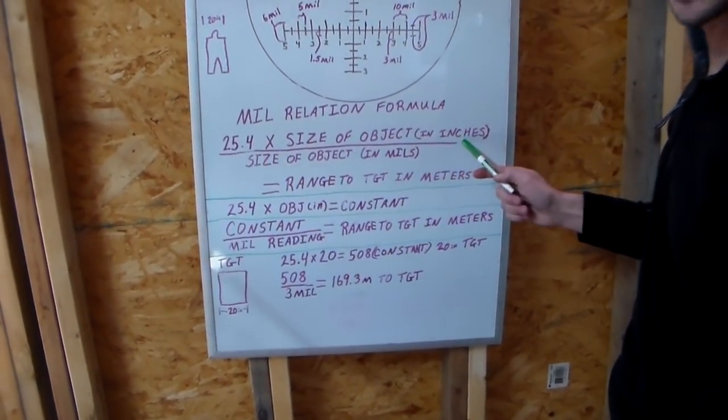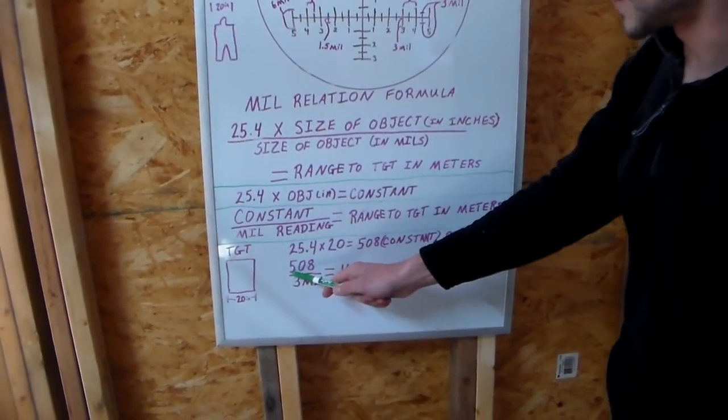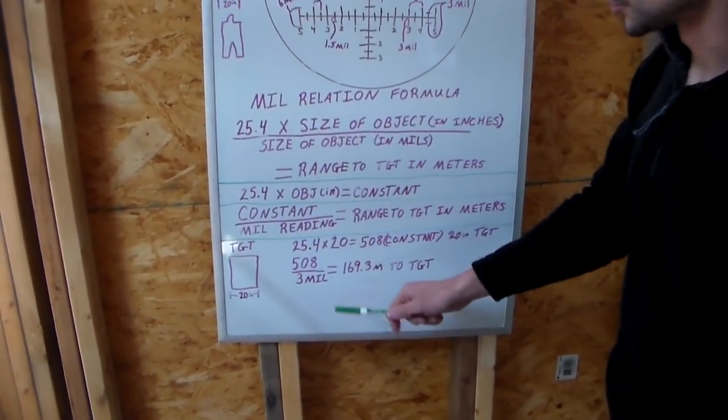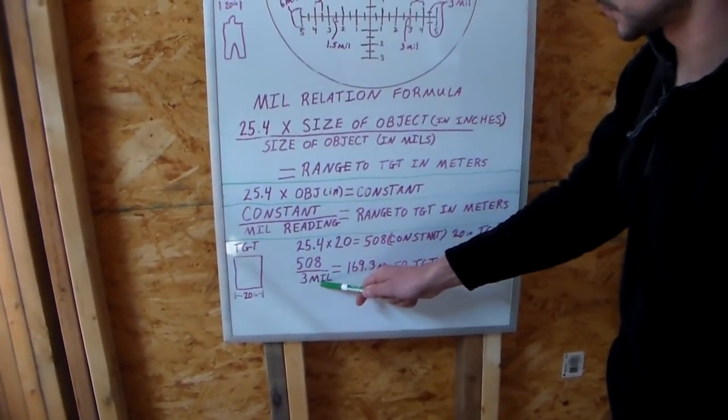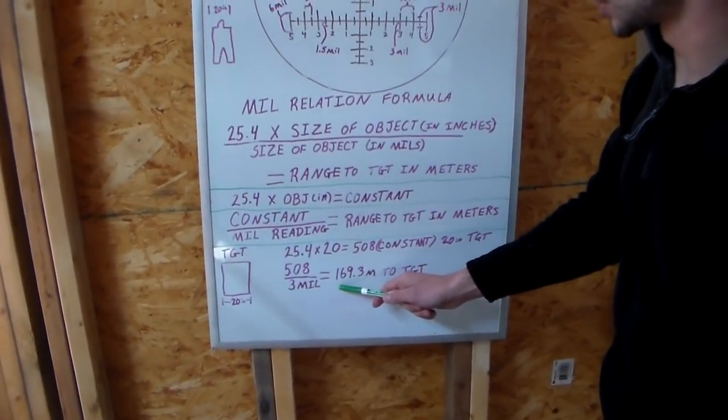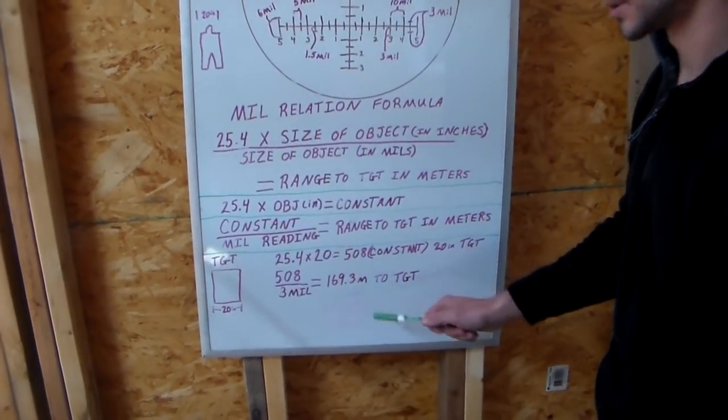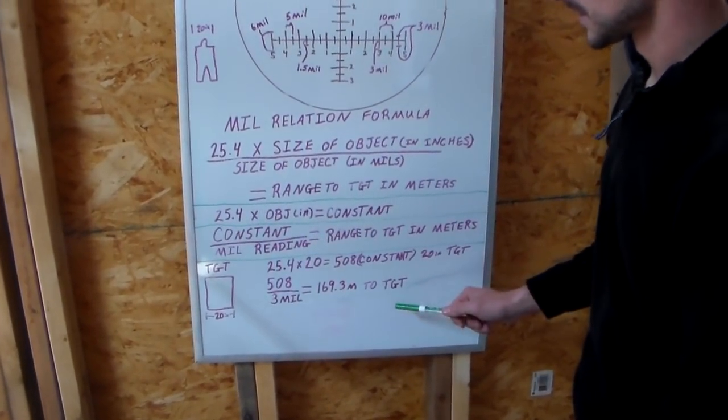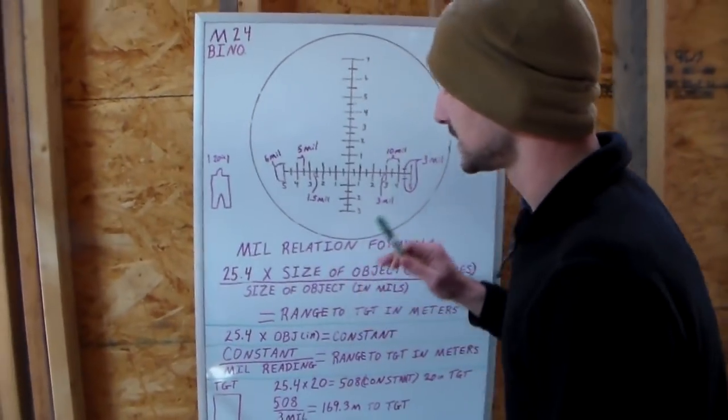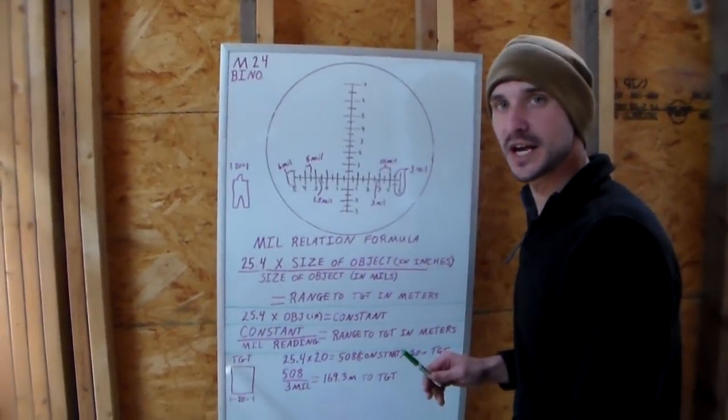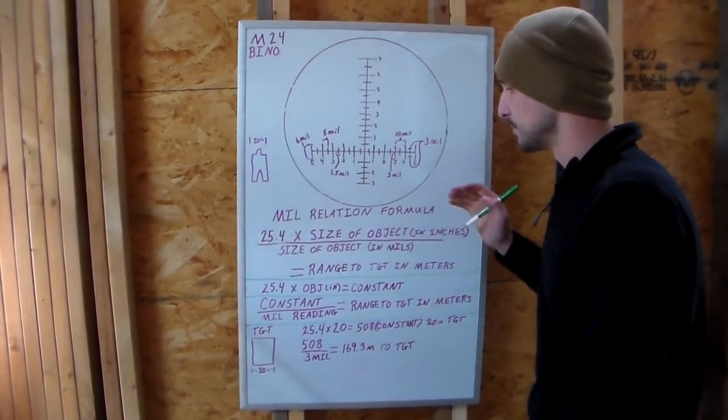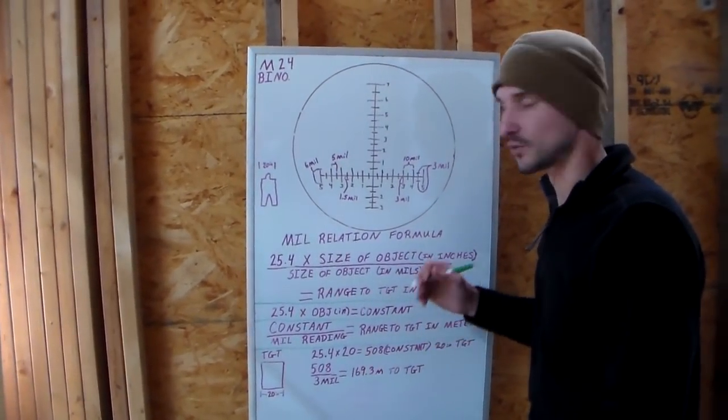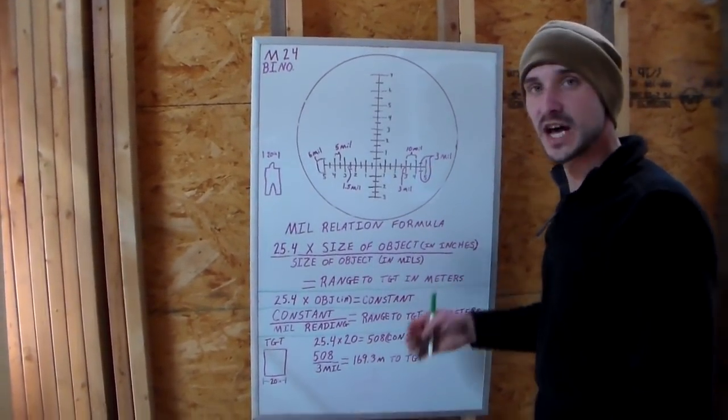So let's punch that in to our formula. Remember, we already worked the top half, and we came up with 508. So now we're going to divide 508 by 3 mils, which gives us 169.3 meters to the target. So it's a very simple process once you figure it out. It's a little confusing at first. But if you pause it, take notes, re-watch it, it becomes a lot easier.